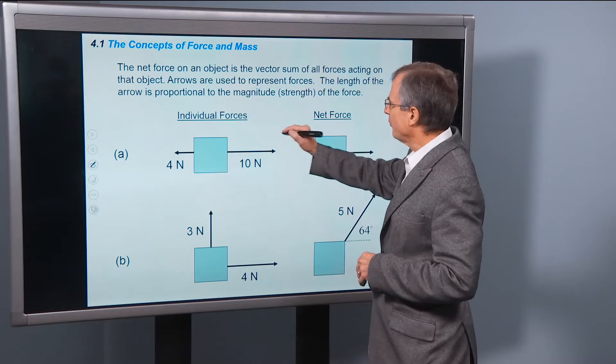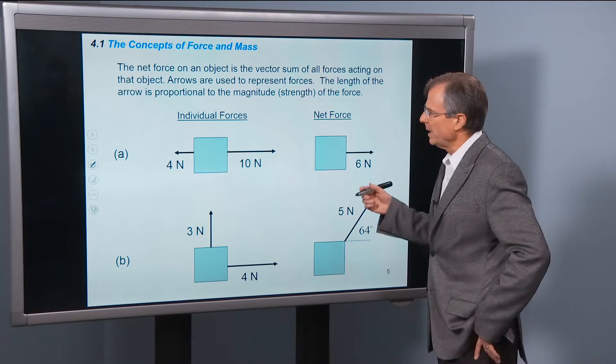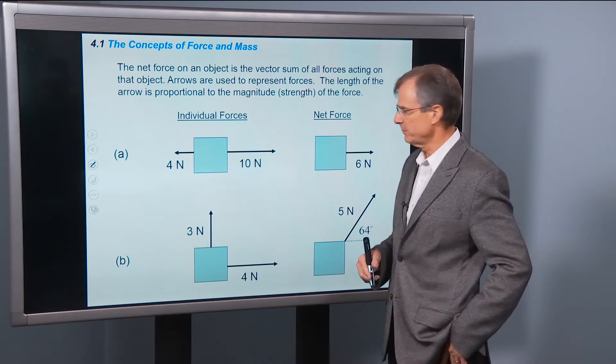So the net force, this is just a repetition of what we did before. The net force on an object is the vector sum of all forces acting on that object. No big deal. It's a resultant force. Arrows are used to represent forces, and the length of the arrow is proportional to the magnitude or the strength of the force.